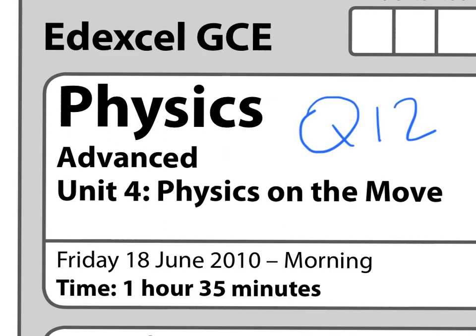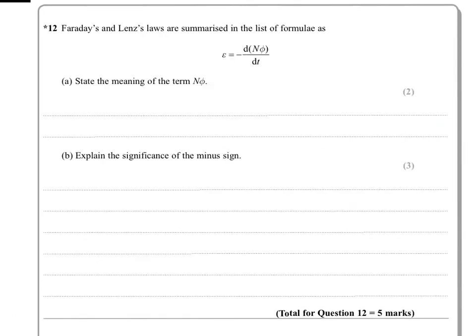Right, same June 2010 paper, question 12, this time another electromagnetism one. Okay, Faraday and Lenz's laws are summarized in the list of formulae as EMF equals d(Nφ)/dt.